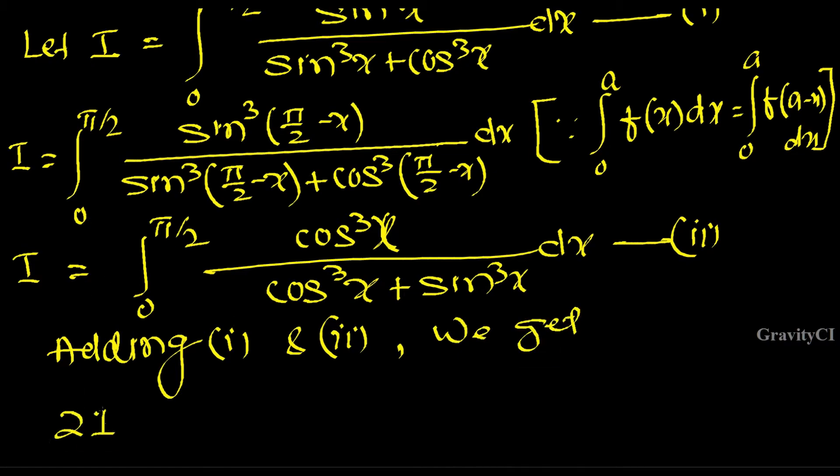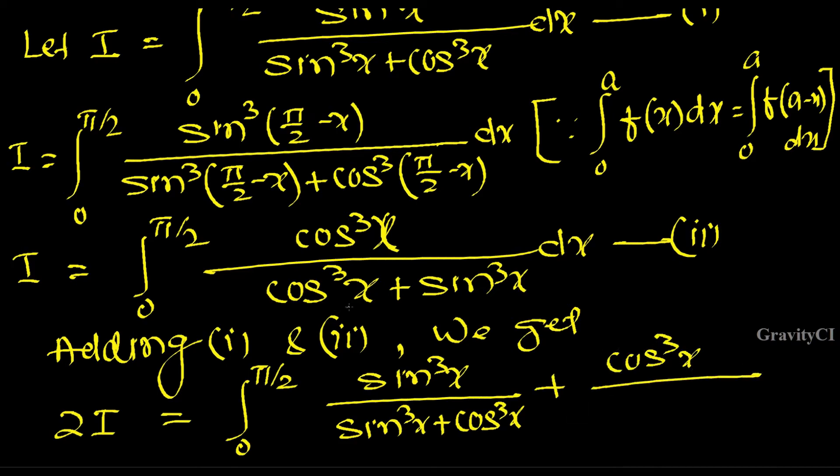2I equals integral 0 to π/2 of sin³x upon sin³x plus cos³x, plus cos³x upon sin³x plus cos³x dx. We will change the order.